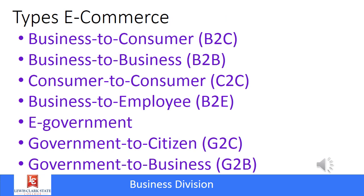E-commerce is business that's done electronically. Some of the different methods include business-to-consumer, where businesses sell directly to consumers; business-to-business, where businesses buy from each other; consumer-to-consumer, such as Craigslist; business-to-employee; e-government, specifically for working with government; and mobile commerce, among quite a few others.